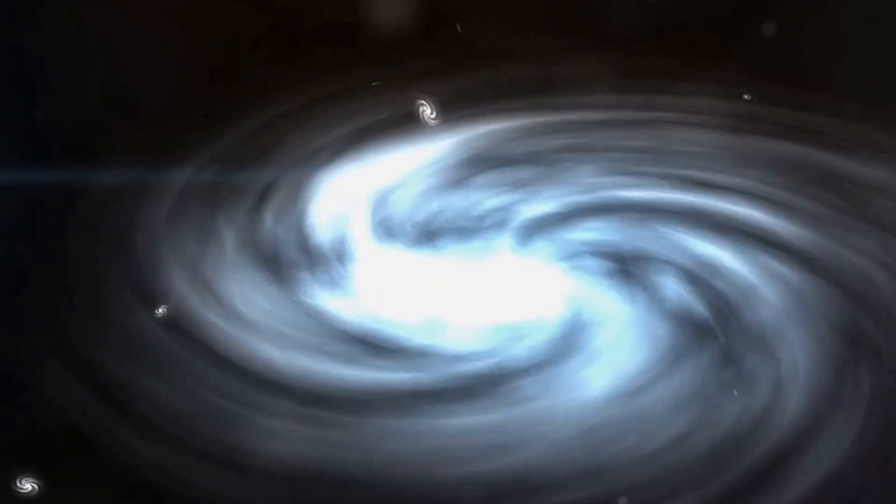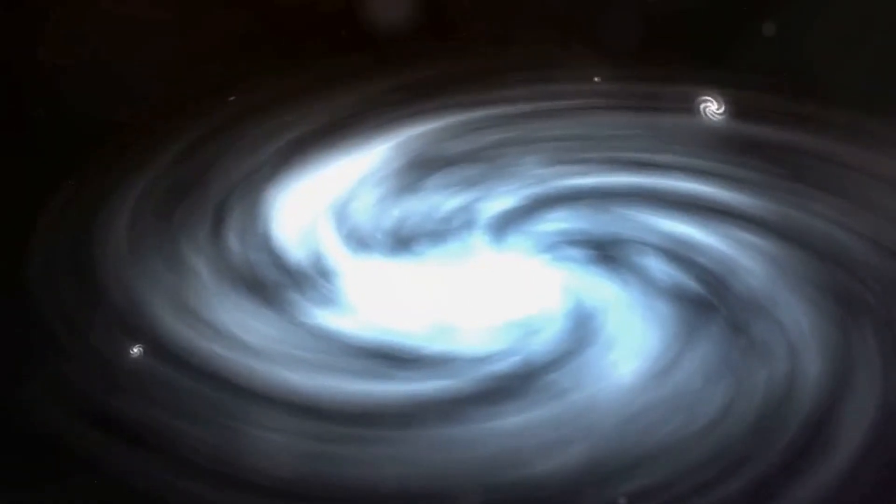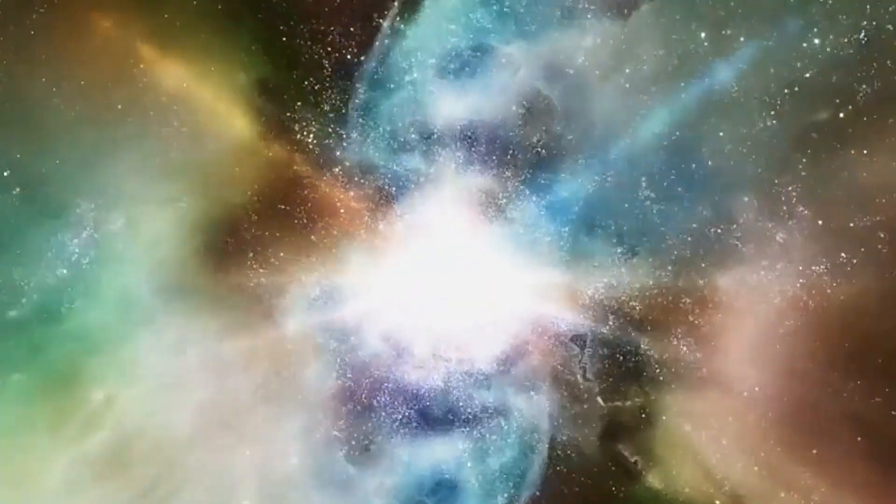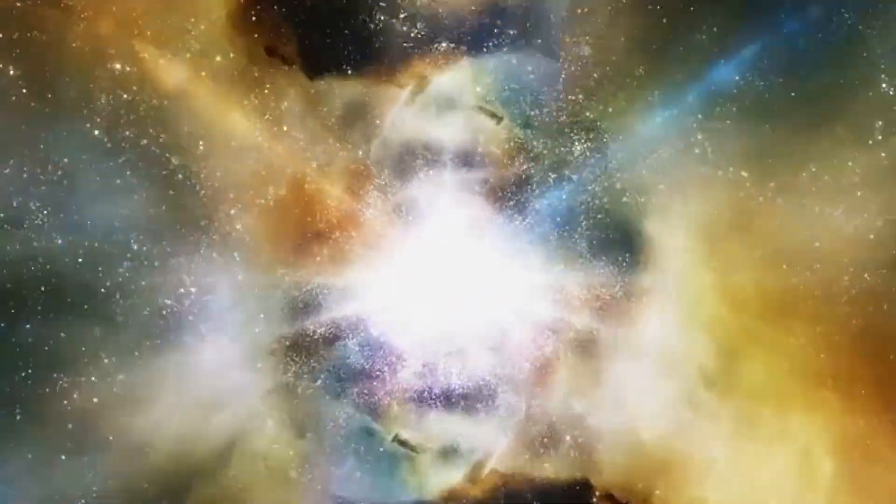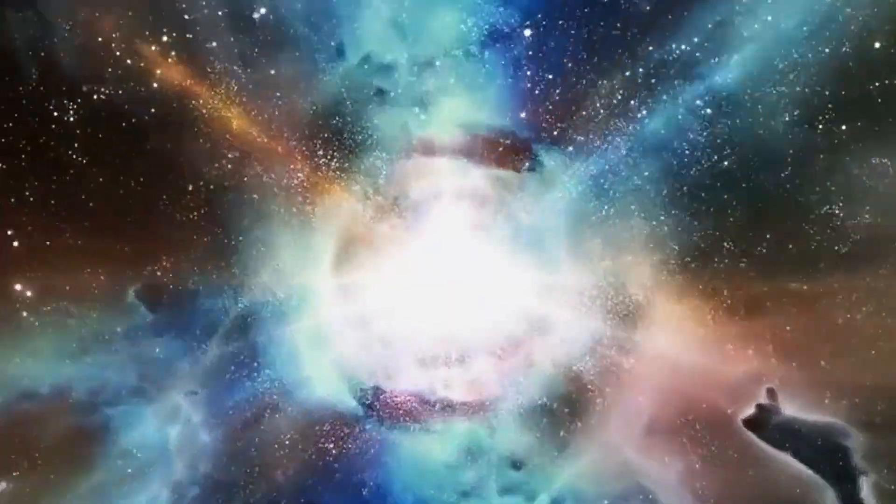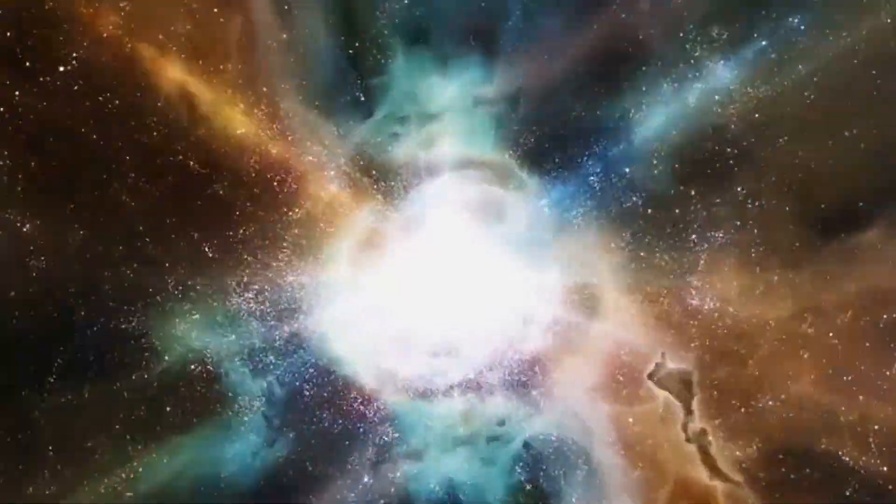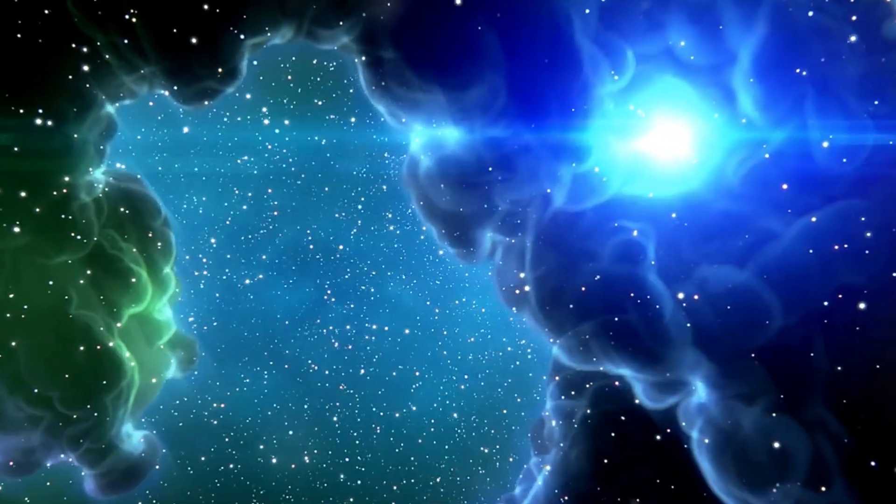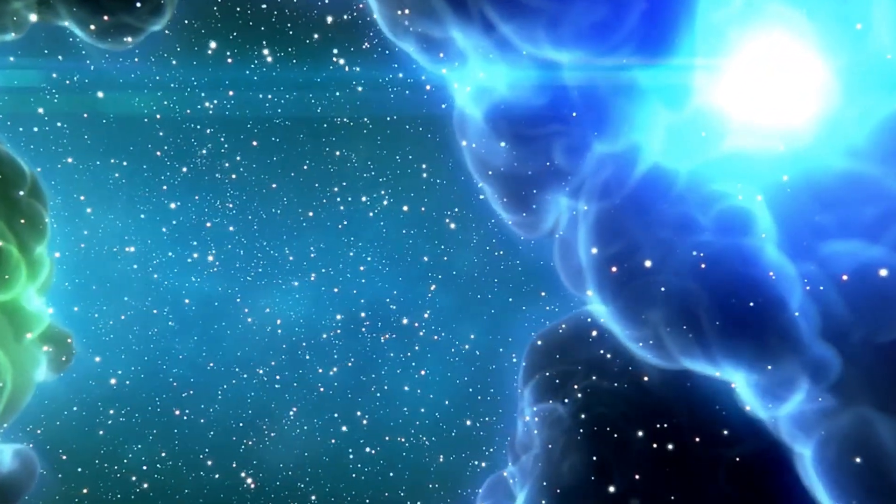With such extreme features, it's no wonder neutron stars create ripples in our understanding of physics when they collide. When neutron stars collide, the universe takes notice. The spectacle of two neutron stars spiraling towards each other is a dance choreographed by gravity itself. The stars, each one about a city's size but with a mass greater than the sun, are drawn inexorably closer in a death spiral that can last millions of years.